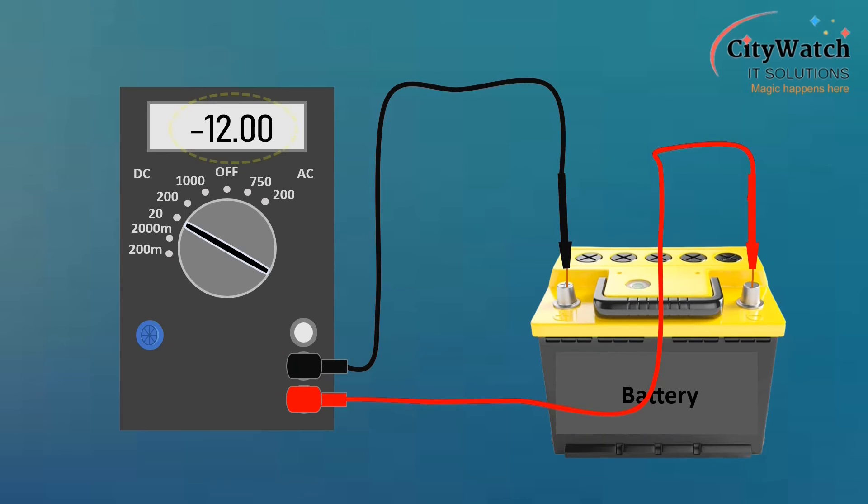If you are getting a negative voltage value, it means your measuring probes are of reversed polarity. To correct this, simply swap the multimeter probes.